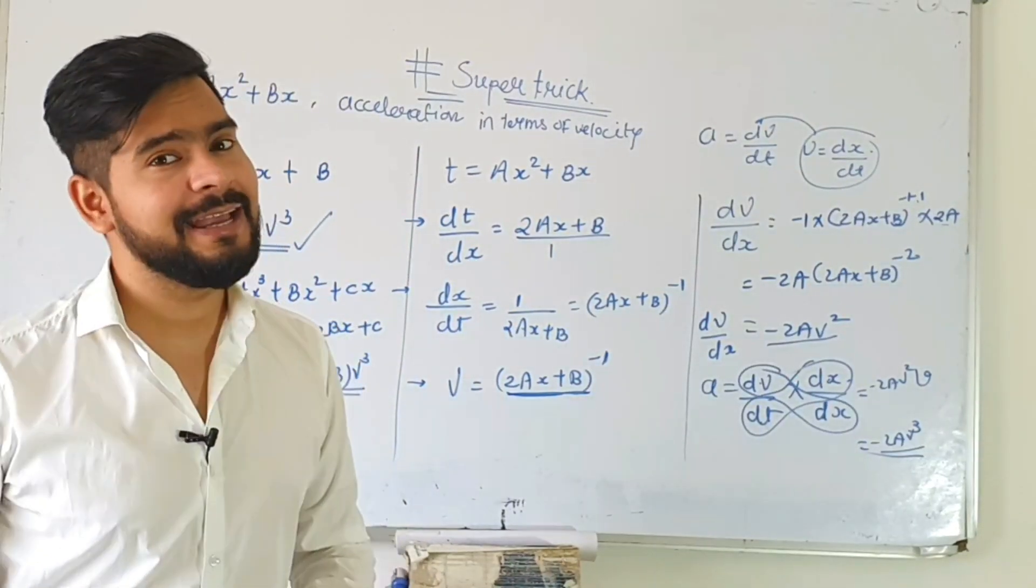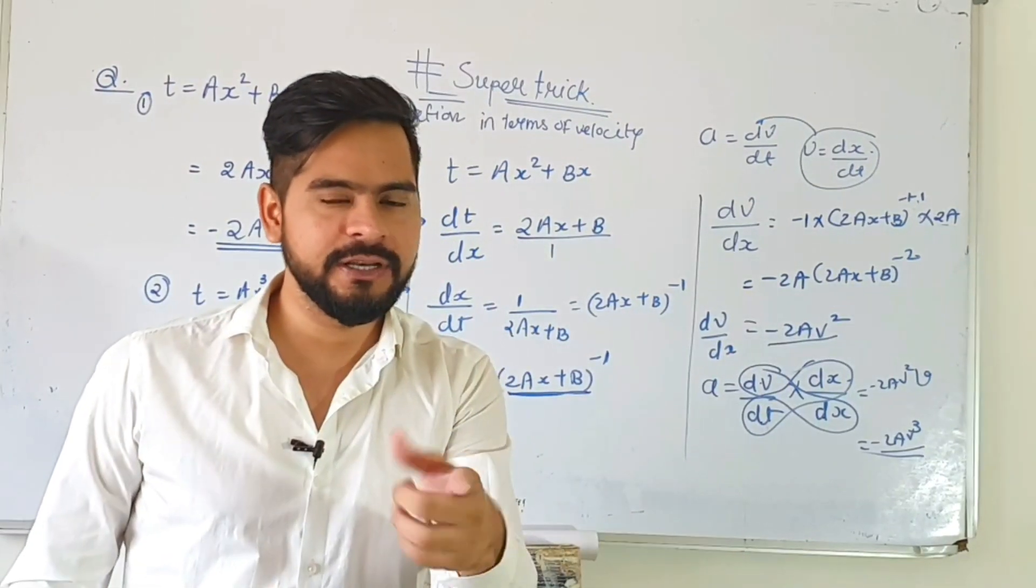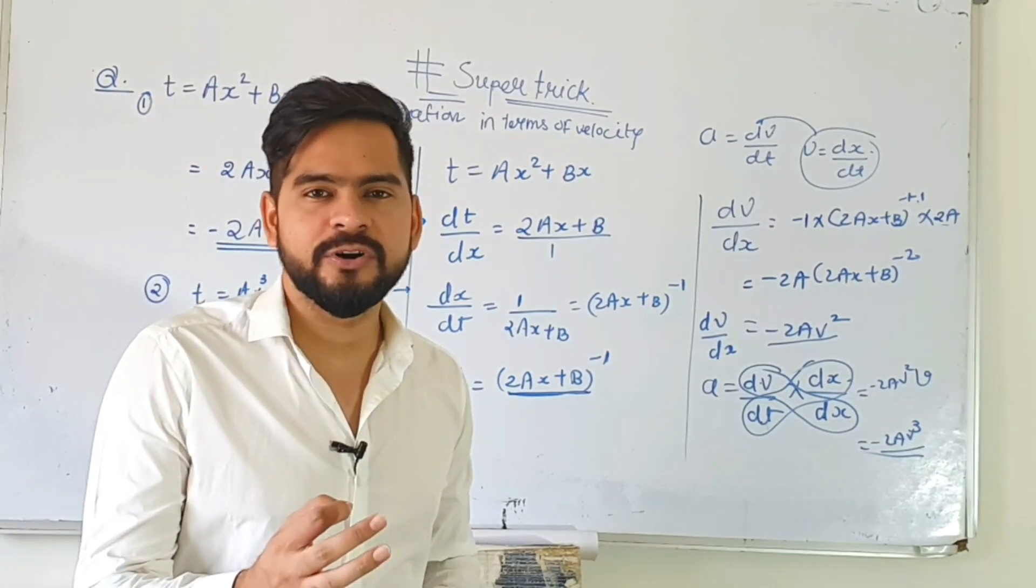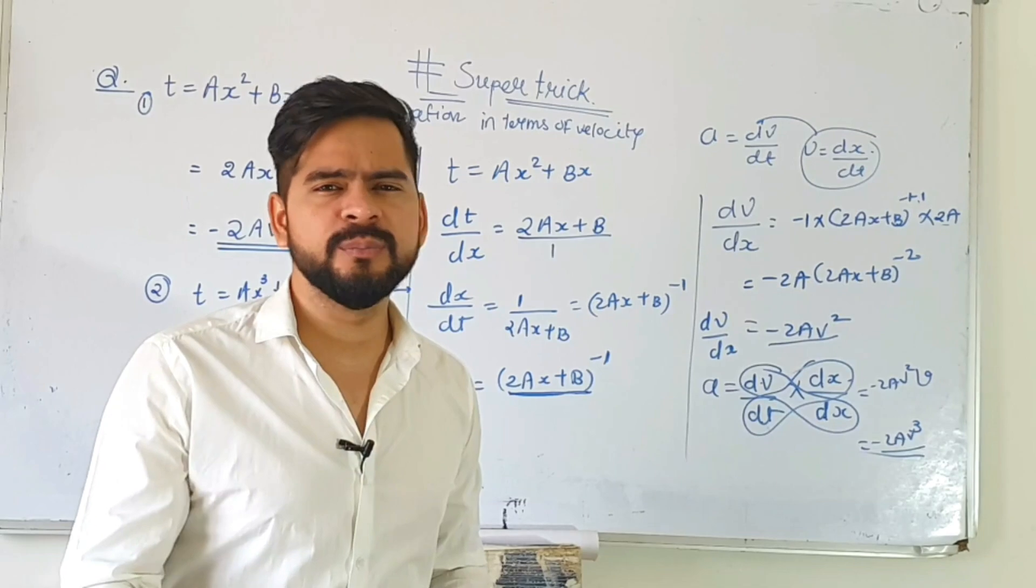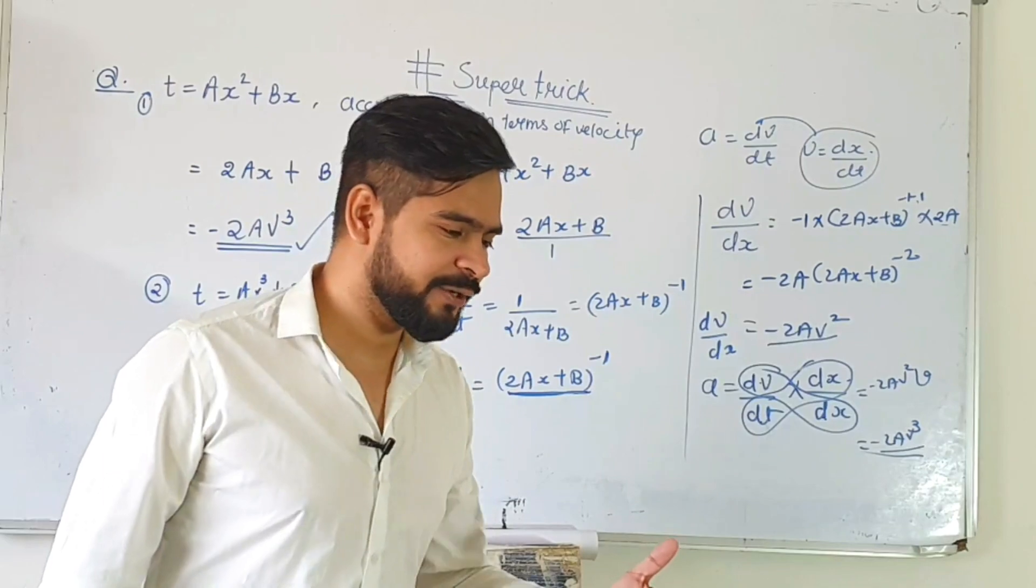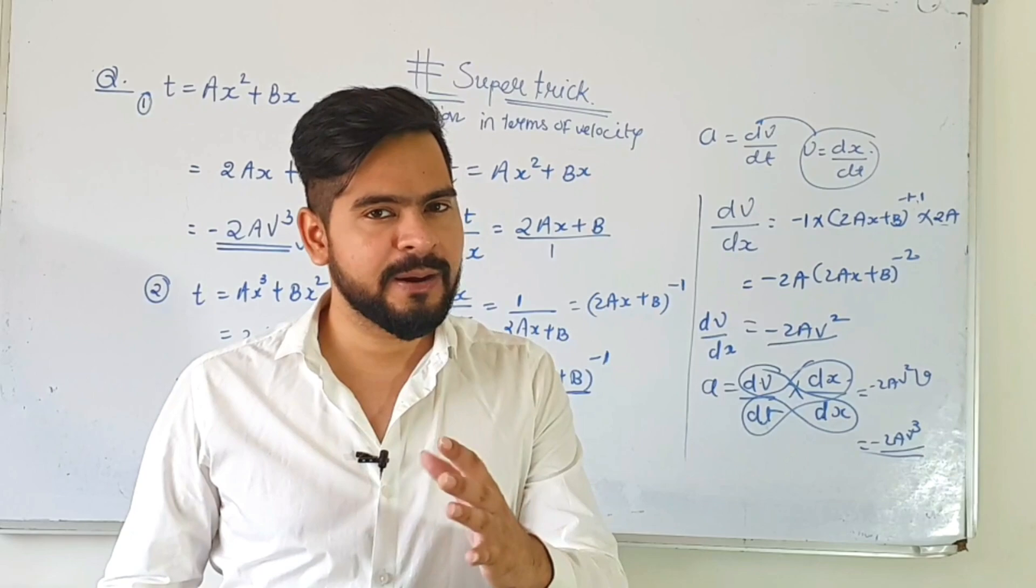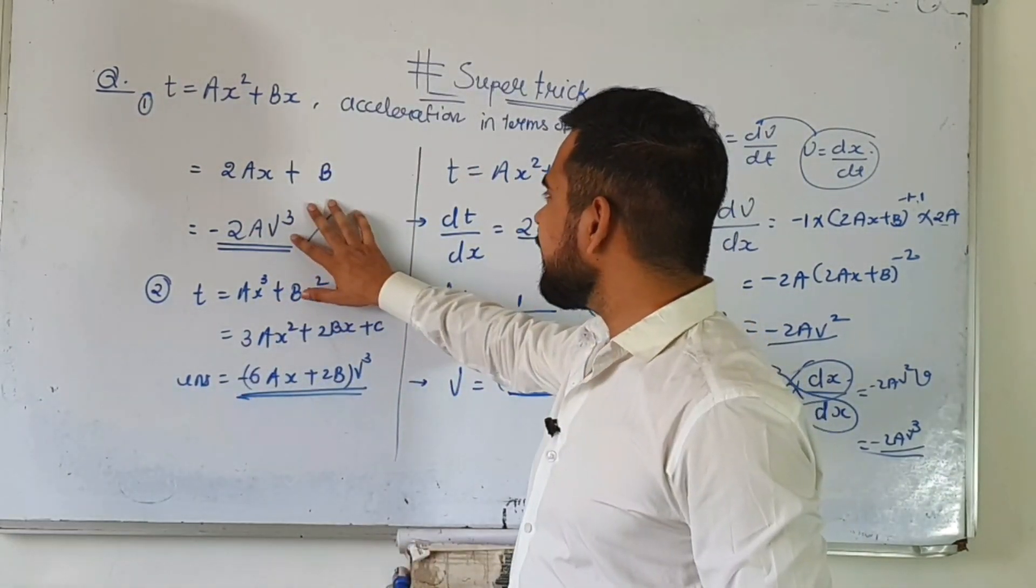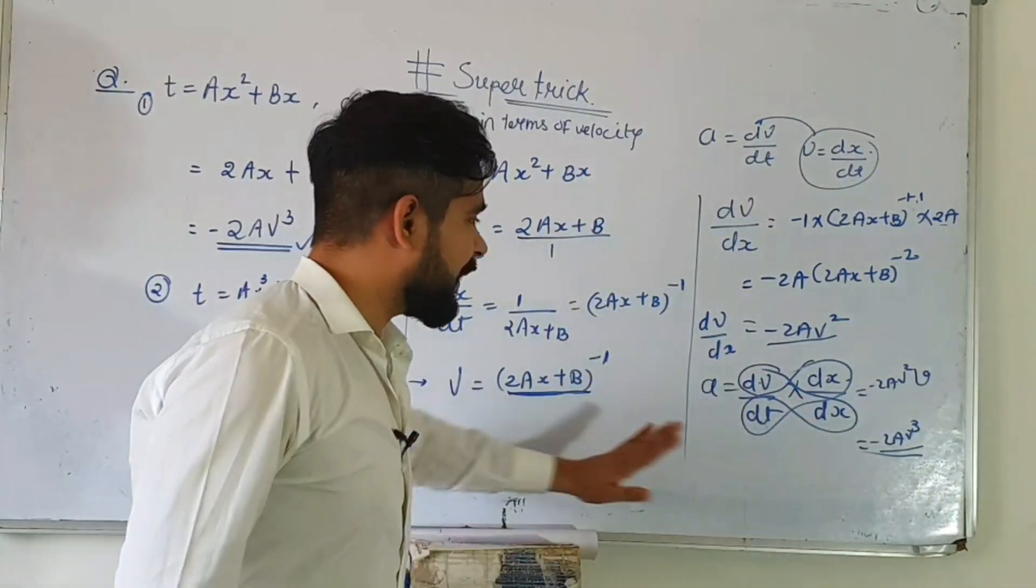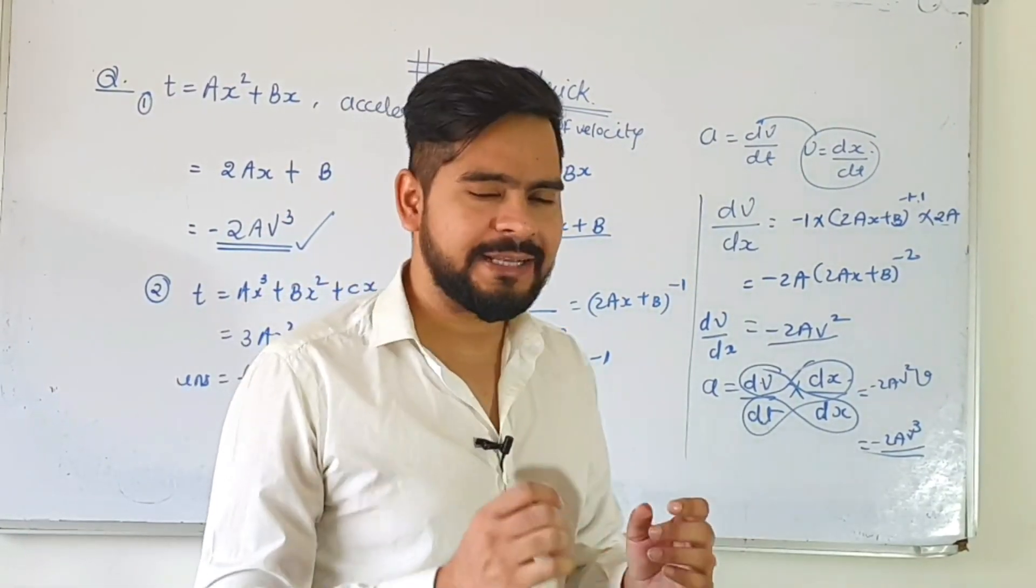Now you decide whether this is a super trick or not. So much work was done, and if even one mistake happens, your question is gone. In competition, we have to do something like this. Every second is important for you. And with such super tricks, many problems, you will see that many questions have come in competitions. If you're solving previous year questions, you might know about this. Questions have come. So many such tricks I will keep bringing for you. Just remember this: two times differentiation, multiply minus v cube. That's it. And see, this is the general method.